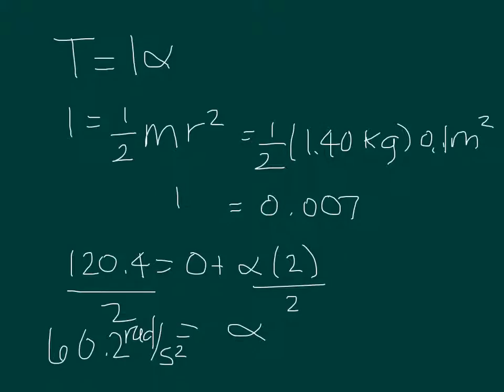So the next thing we want to do is find what the torque is, so let's take a look at the equation. It's equal to the moment of inertia times the acceleration. To find the moment of inertia, it is simply 1.5 times the mass times the radius squared. We're given in the problem the mass is 1.40 kilograms and the radius is 0.1 meters. So we find the moment of inertia to be 0.007.